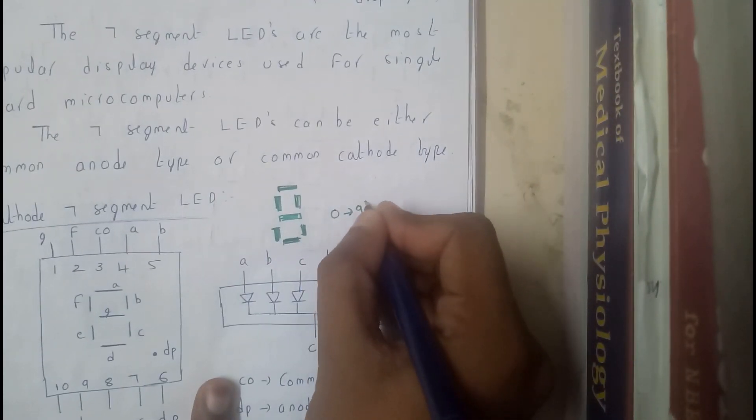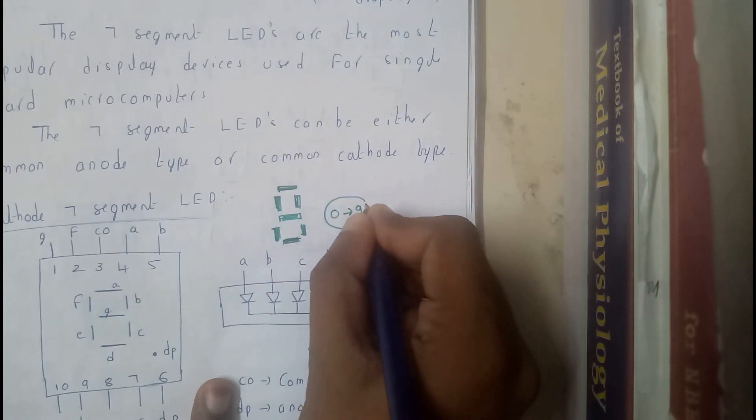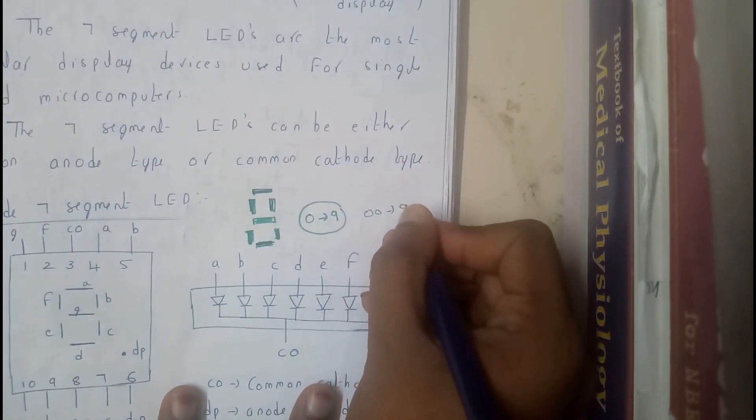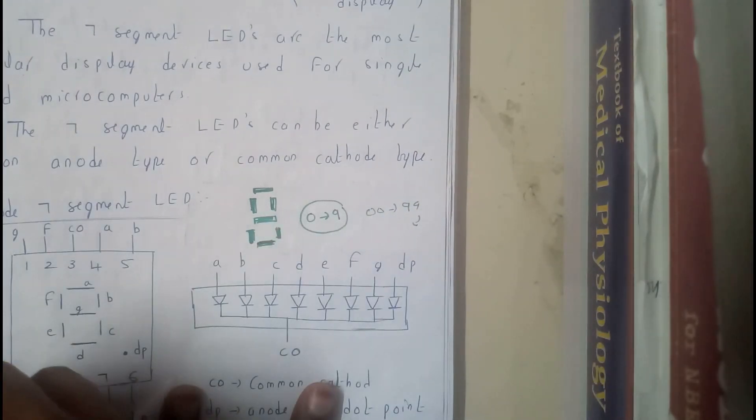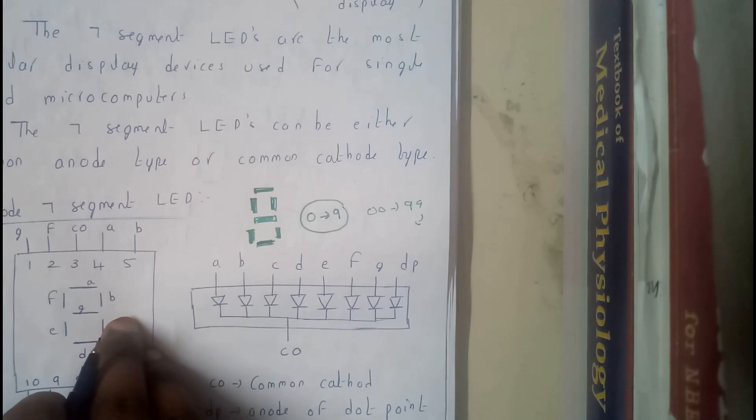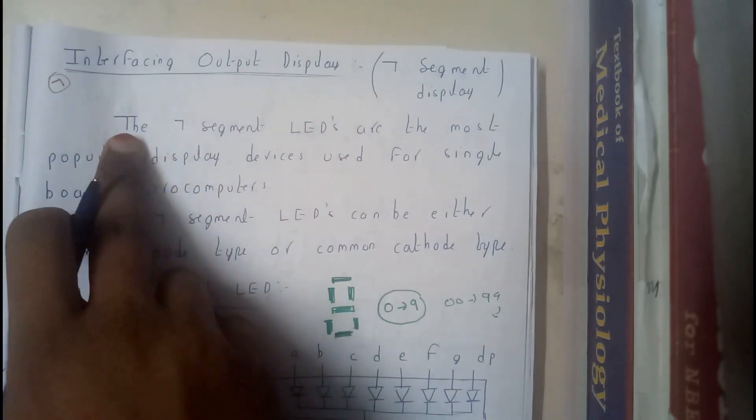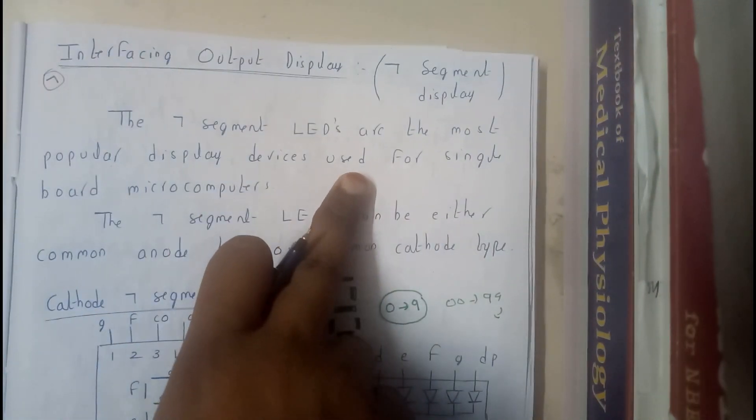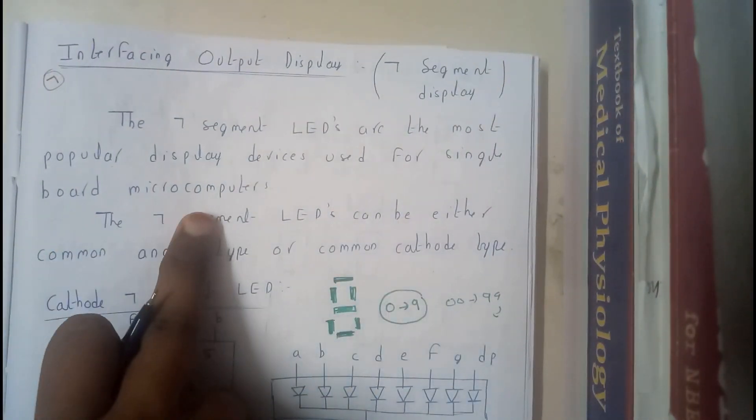Using this LED only, from zero to nine all numbers are indicated. So if there are multiple, if there are two like this, you can indicate from zero zero to 99. Like that, according to the number of LEDs, segment increases. You can show different numbers.